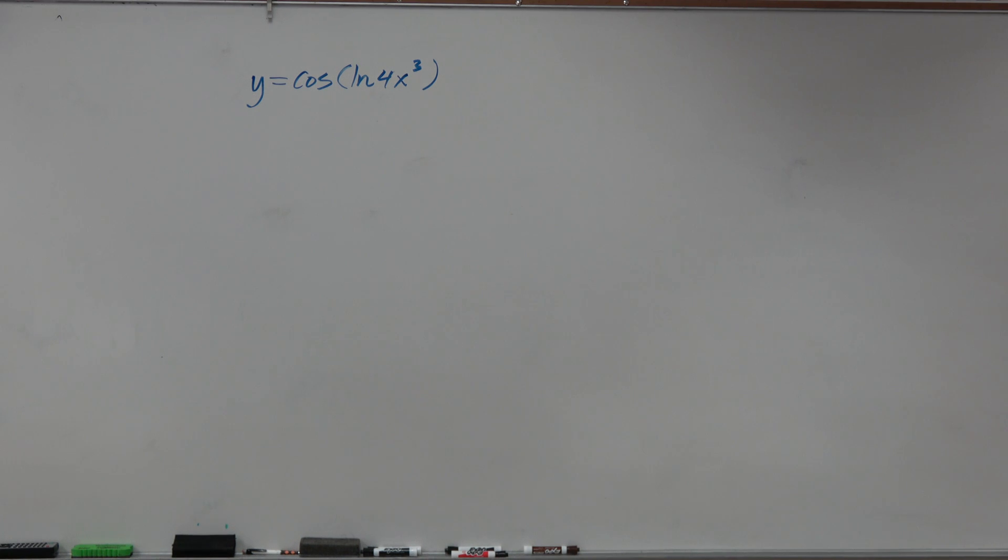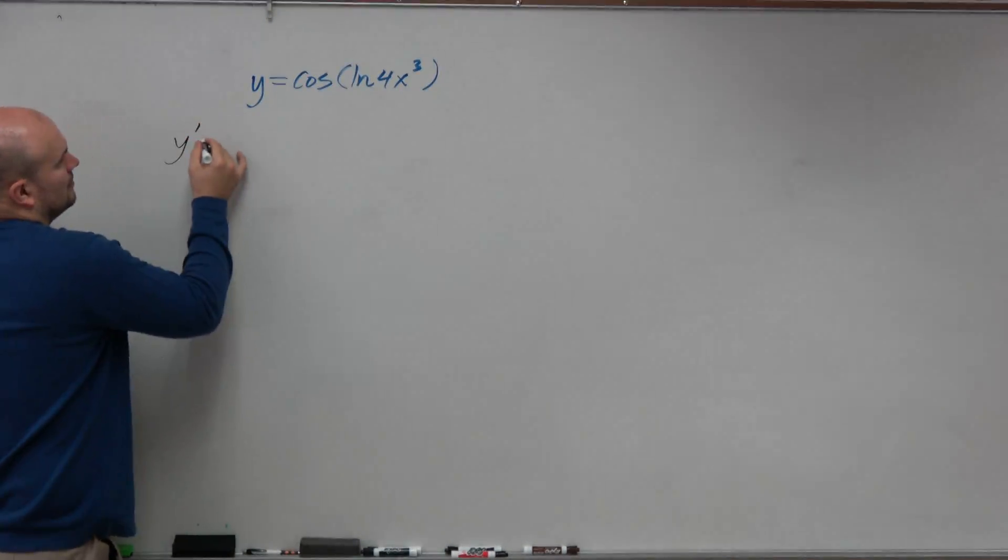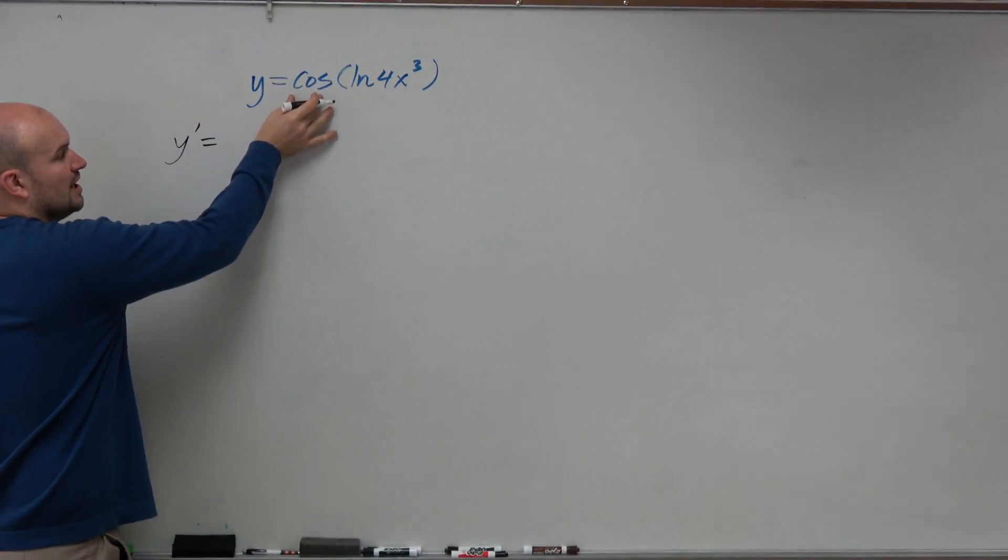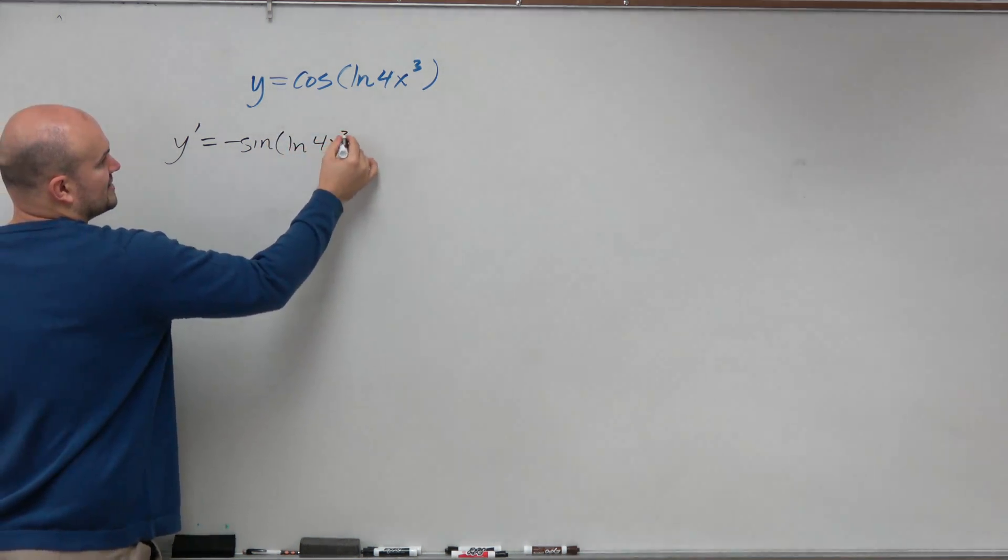Both sides, that's not really going to help much in this example. But if we're going to be taking the chain rule, the derivative of cosine is going to be negative sine of our inside function, ln of 4x cubed,